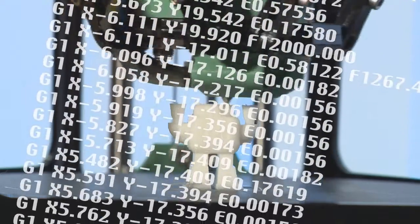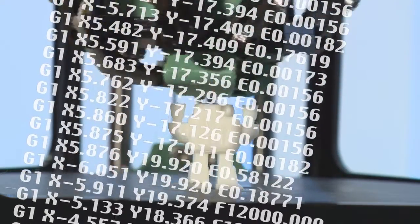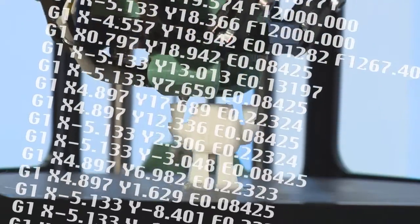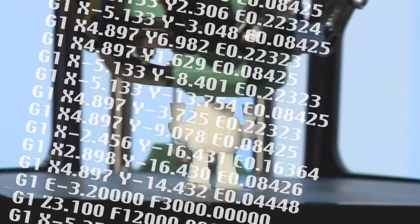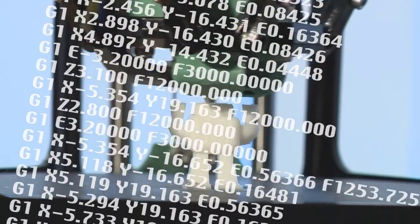The G-code file is simply a text file which contains commands which command the machine to move to the required positions and extrude the right amount of filament to create the object that you desire.